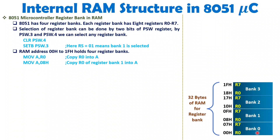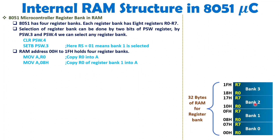By default Bank 0 is selected, but you can change that. You can also execute MOV A, 08h — this does not copy the value 08 into A; without a hashtag, 08h is a RAM address. Address 08h holds R0 of Bank 1, so whatever data is at that address gets copied into A. Similarly, if you write 17h, that is R7 of Bank 2, and that data will be copied into A.